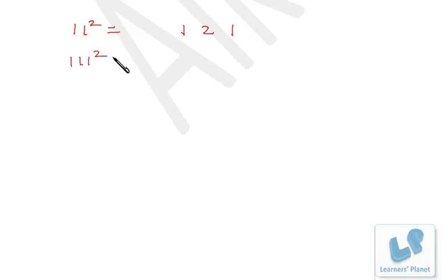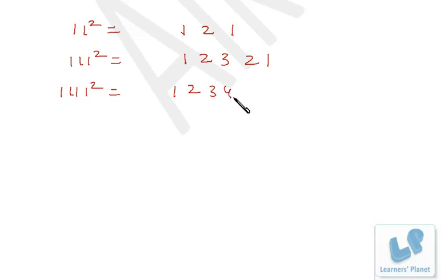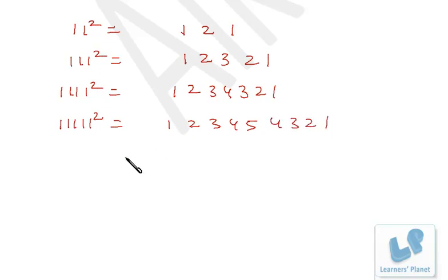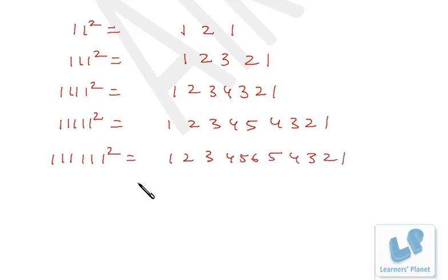An interesting pattern: numbers made entirely of 1s. 11²=121; 111² has three 1s, so count up to 3 then back down: 12321; 1111² gives 1234321; 11111² gives 123454321; 111111² gives 12345654321. This is a beautiful pattern formed by squaring repunit numbers.